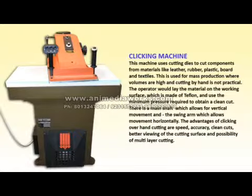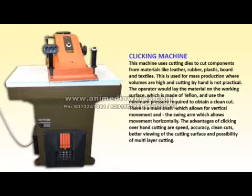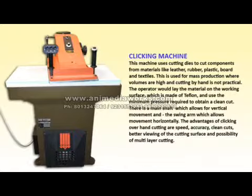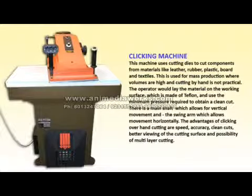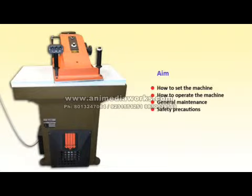There is a main shaft which allows for vertical movement and the swing arm which allows movement horizontally. The advantages of clicking over hand cutting are speed, accuracy, clean cuts, better viewing of the cutting surface, and possibility of multi-layer cutting. Aim: how to set the machine, how to operate the machine, general maintenance, and safety precautions.